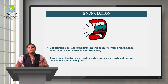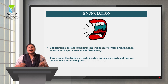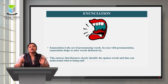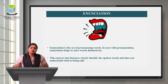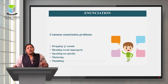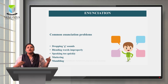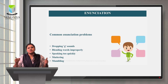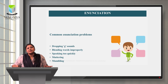Now let us move on to enunciation. Enunciation is the act of pronouncing words correctly and clearly in sync with pronunciation. It helps us utter words distinctively so that the listener clearly identifies the spoken words and understands what is being said. Common enunciation problems include dropping the G sounds — for example, saying 'doin'' instead of 'doing.' Dropping G sounds to sound cool is wrong enunciation.